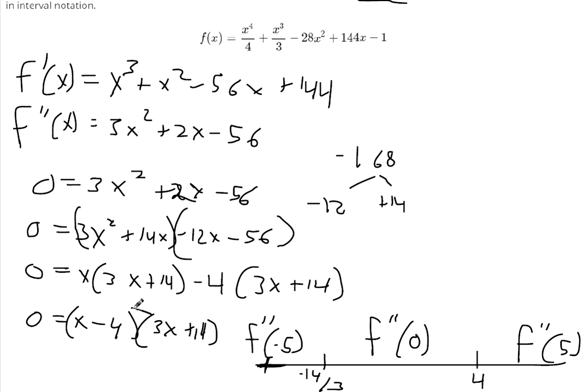If you plug in 0, then you get negative 4 times positive. You get a negative value for the second derivative. So it's negative between negative 14 over 3 and 4. And if you plug in 5, then you get 1 here times some positive number, so you get a positive number.